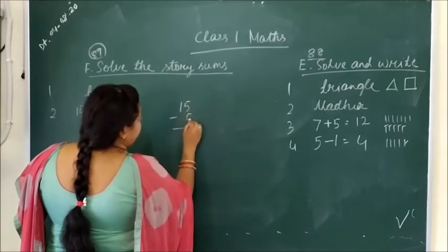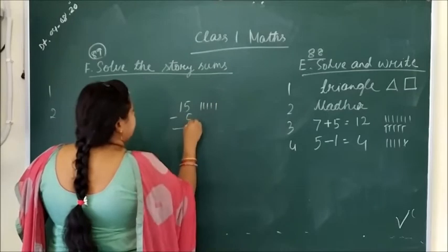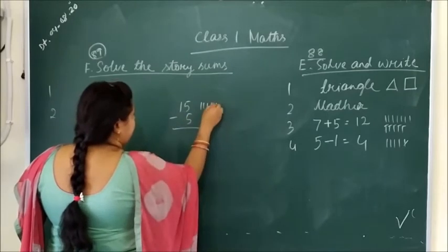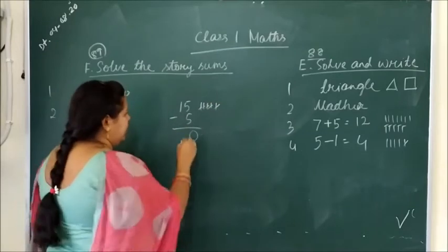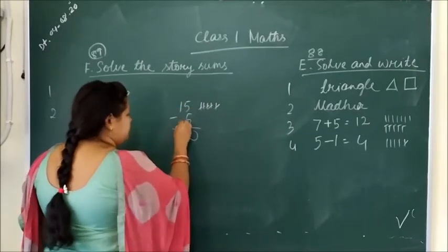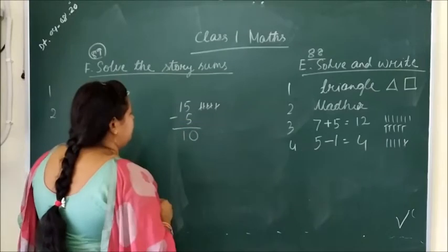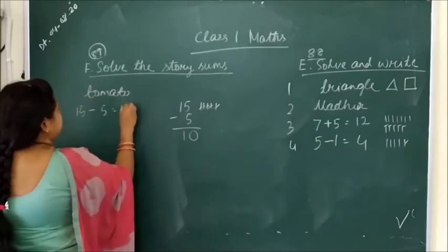So here there's 5, here there's 5. 5, 1, 2, 3, 4, 5. How many are left? Here below there's also 5. So cut 5: 1, 2, 3, 4, 5. How many are left? Zero. On top there's 1, below there's nothing. That means here 1 will come. So answer is 10.